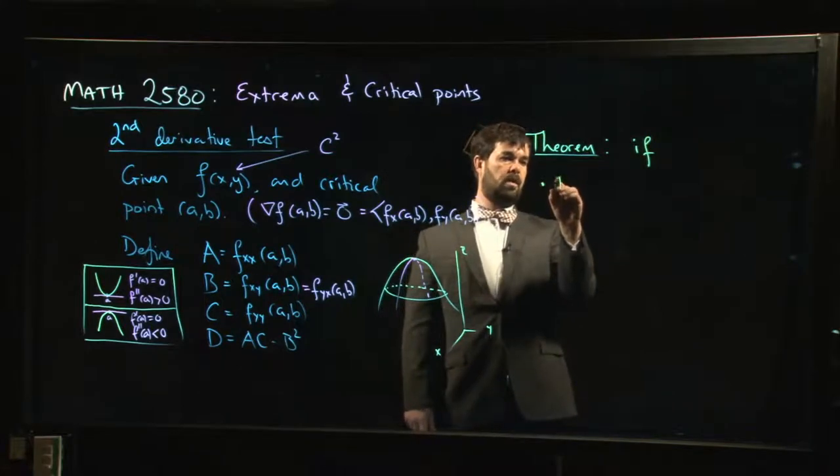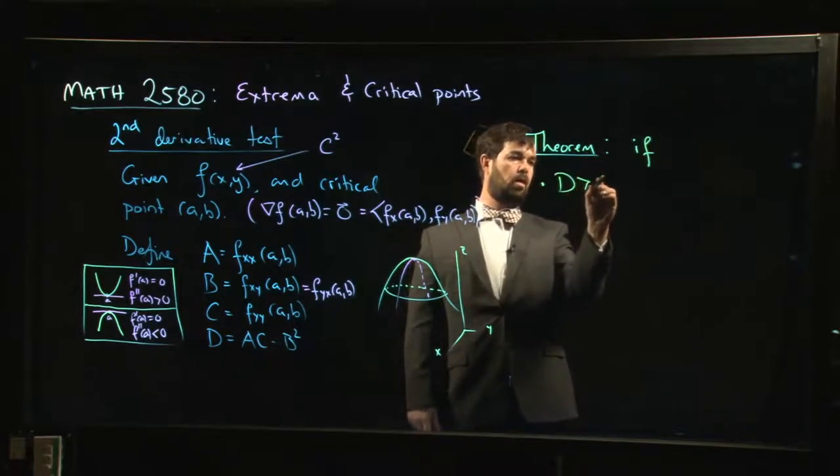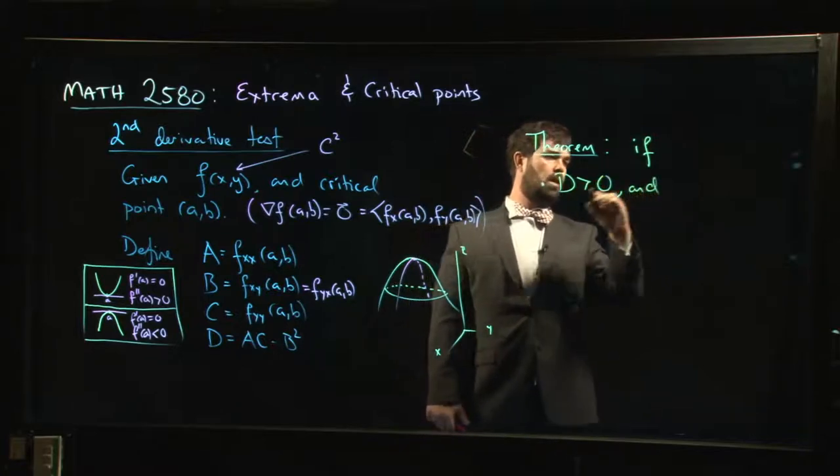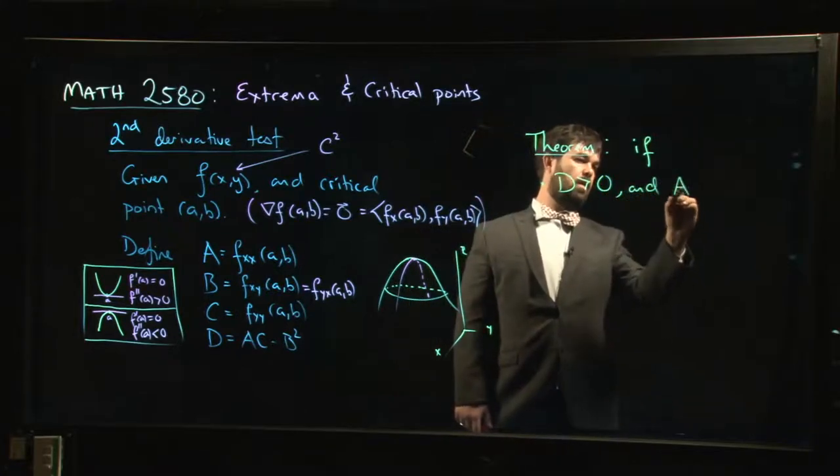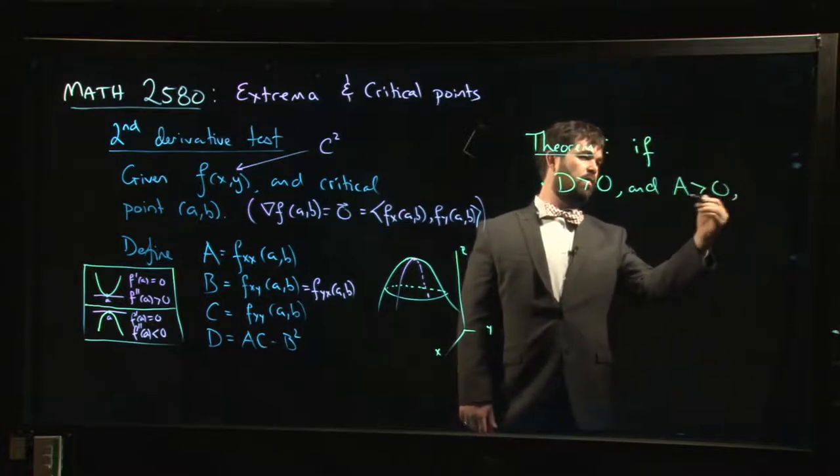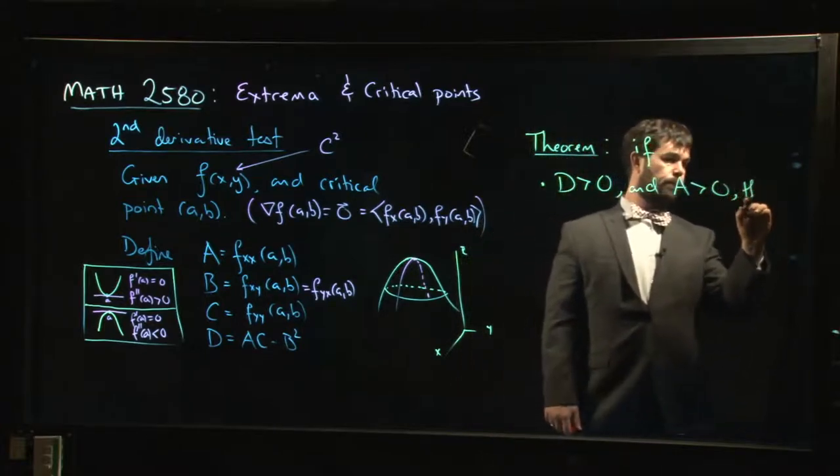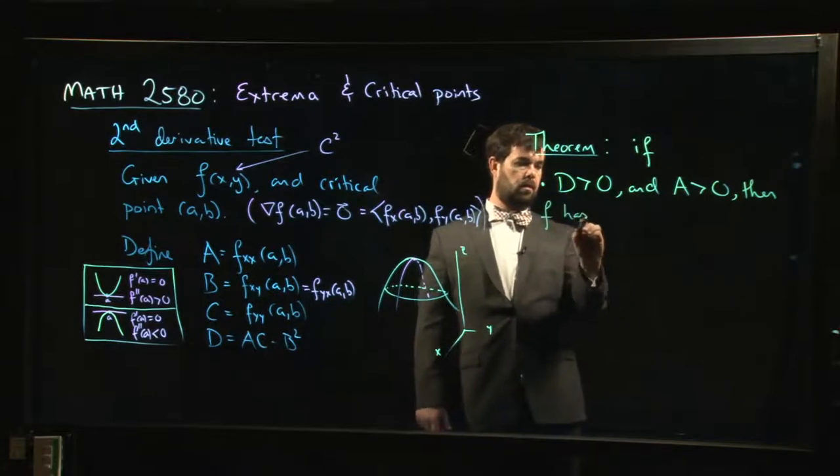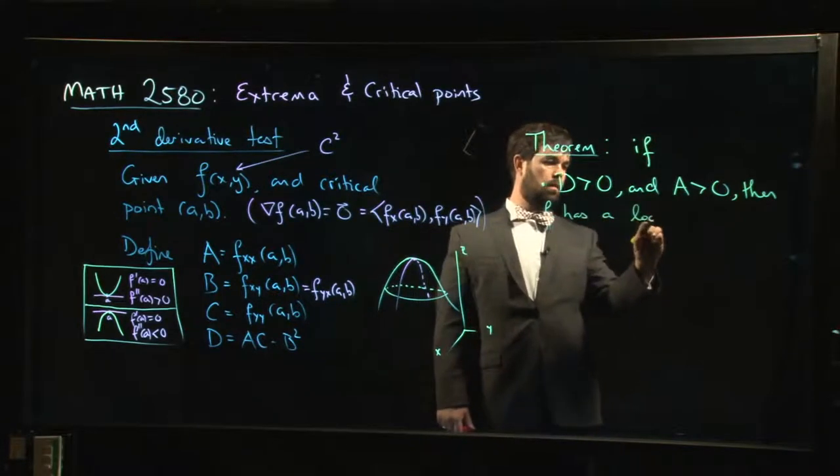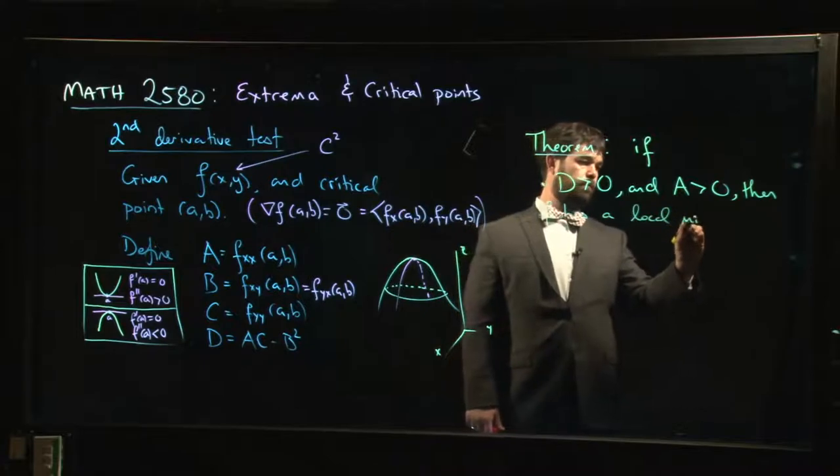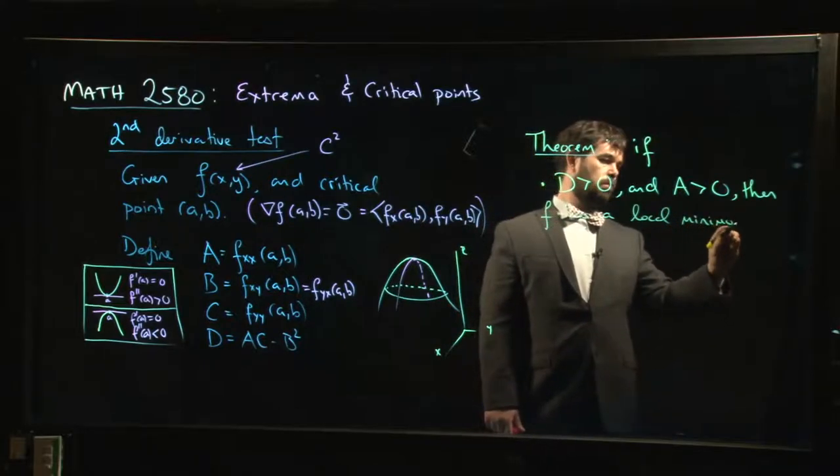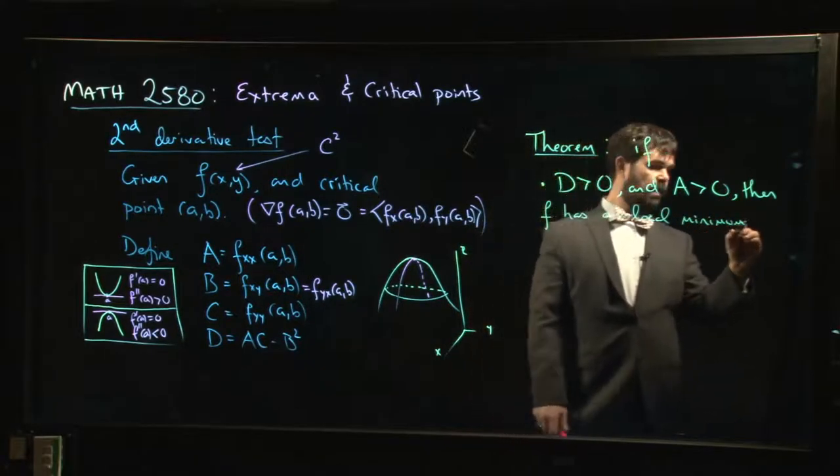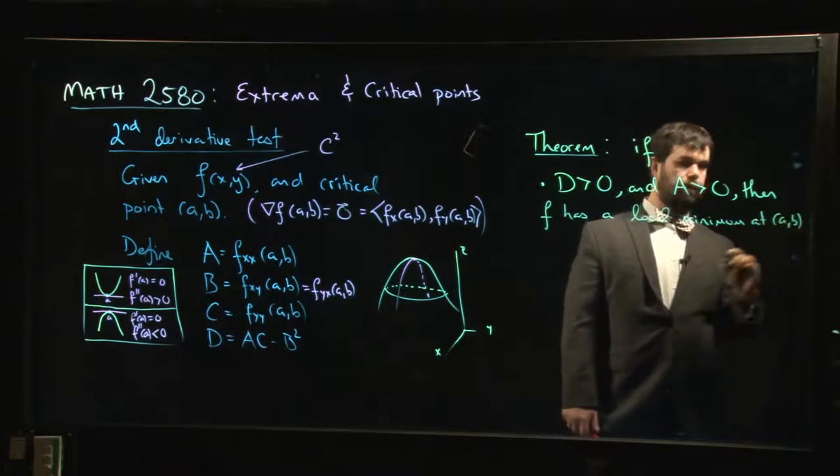If this number D is positive, and if A is positive, then F has a local minimum at that point, at (a,b).